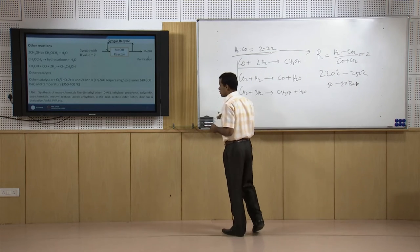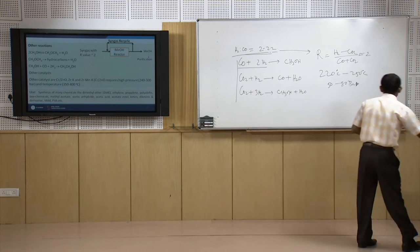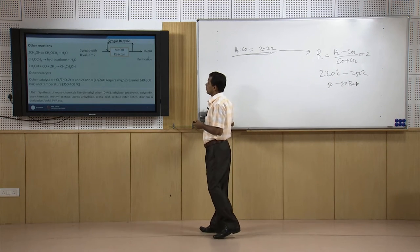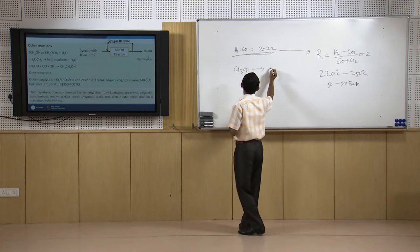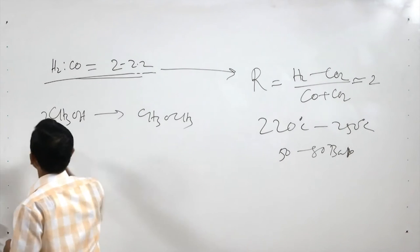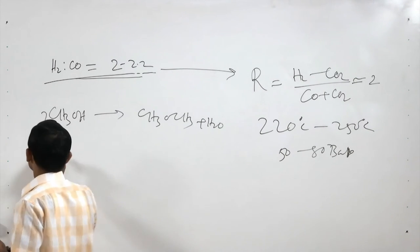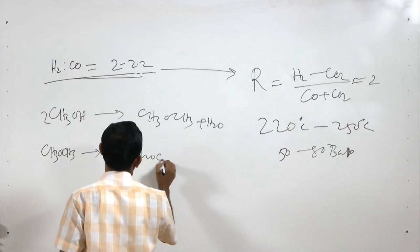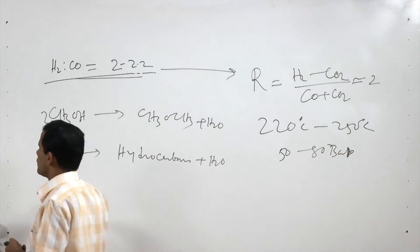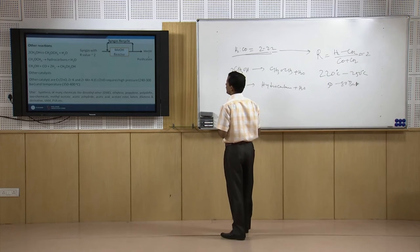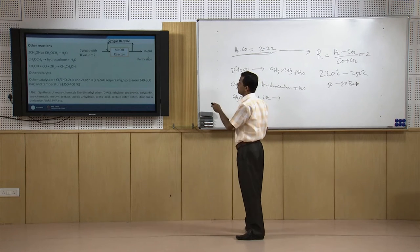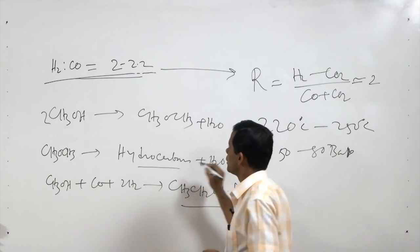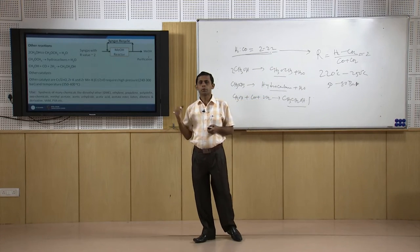Some other reactions also take place in the methanol reactor. These include higher alcohol production and DME production: 2CH₃OH → CH₃OCH₃ + H₂O. DME can also lead to further reactions producing CO₂ and higher alcohols such as CH₃CH₂OH. So higher alcohols, hydrocarbons, and DME are byproducts produced in the methanol reactor.